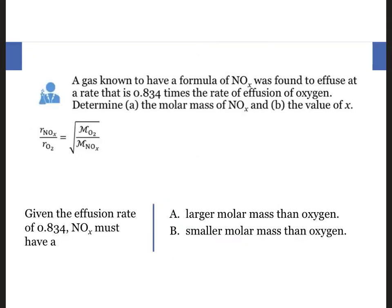All right, so here when we're talking about effusion rates, we see that our NOx gas effused at a rate that is 0.834 times the rate of effusion for oxygen. So if we look at these rates, the rate of NOx over the rate of O2, it's 0.834 times that for O2, which means that if you need to, put that understood one underneath.